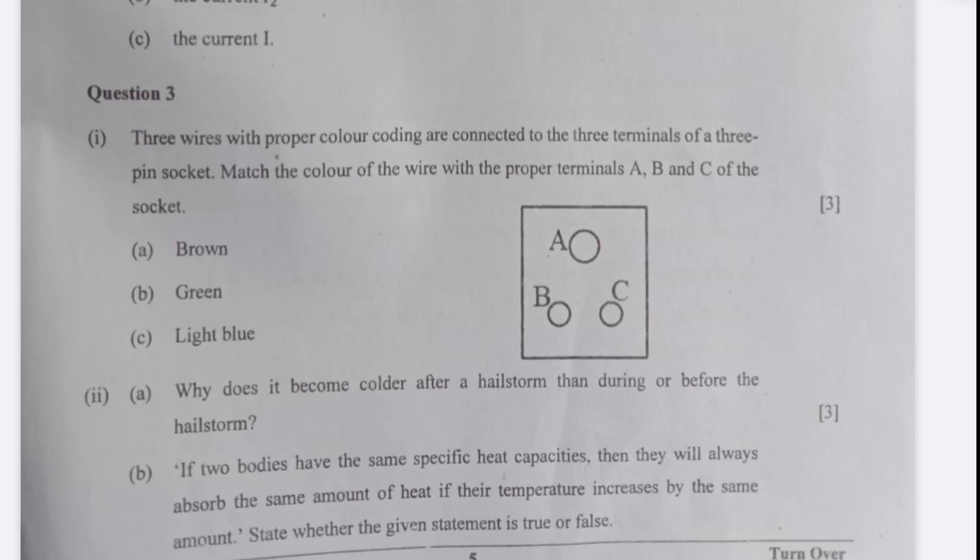Second A. Why does it become colder after a hail storm than during or before the hail storm? Well after the hail storm every gram of ice at 0 degree celsius absorbs 336 joules of energy to melt and form water at 0 degree celsius from the surroundings. Or you could have worded it a little differently saying that the specific latent heat of melting of ice is 336 joules per gram which is absorbed by ice to convert to water from the surroundings thus bringing a cooling effect.